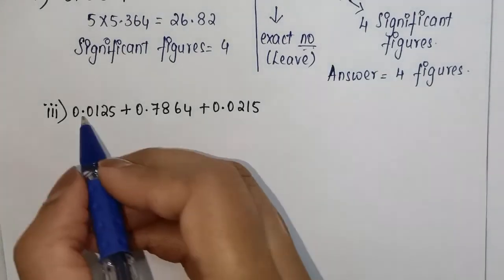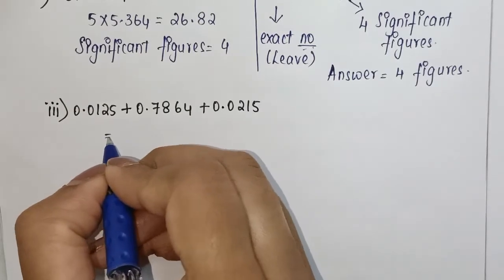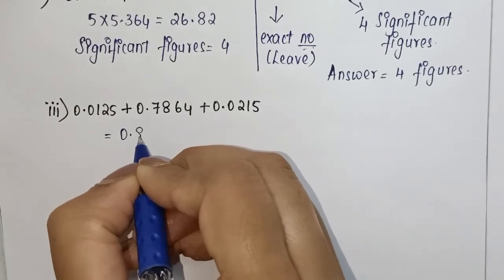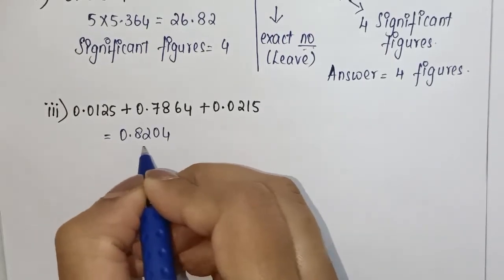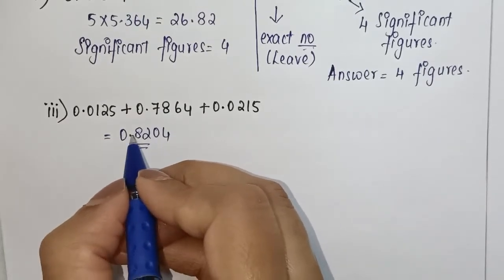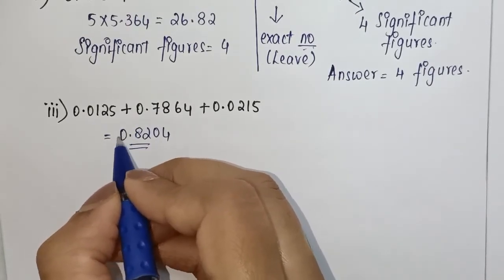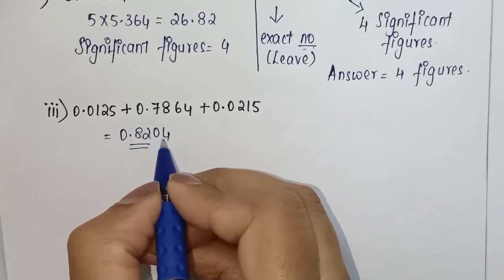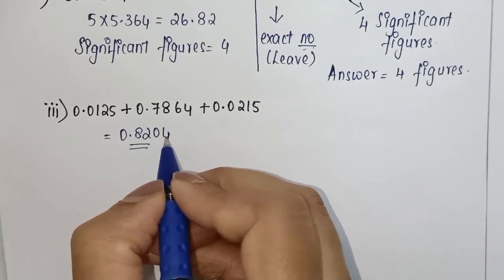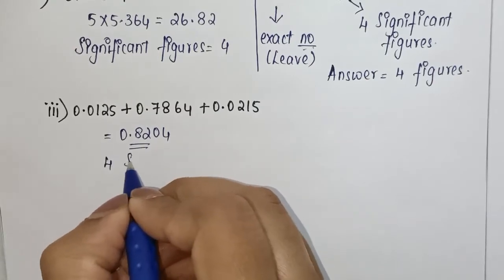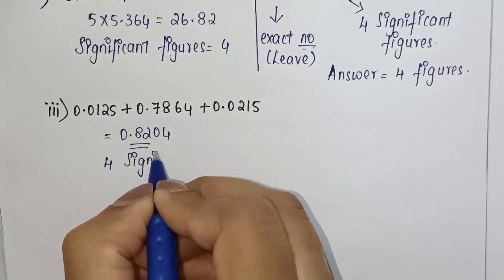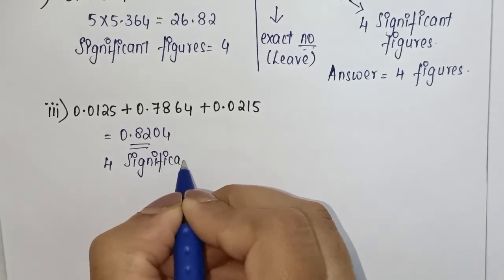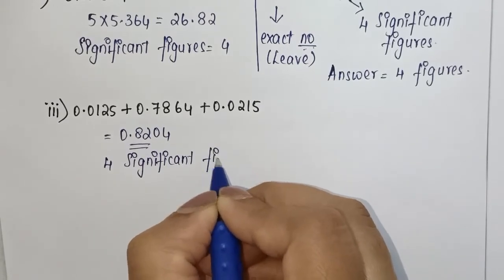When you just solve it, add up all this, your answer is going to be 0.8204. If you check here, the zero before the decimal is not significant, whereas these numbers and this zero here is between two non-zero digits, so we have a total of four significant figures.